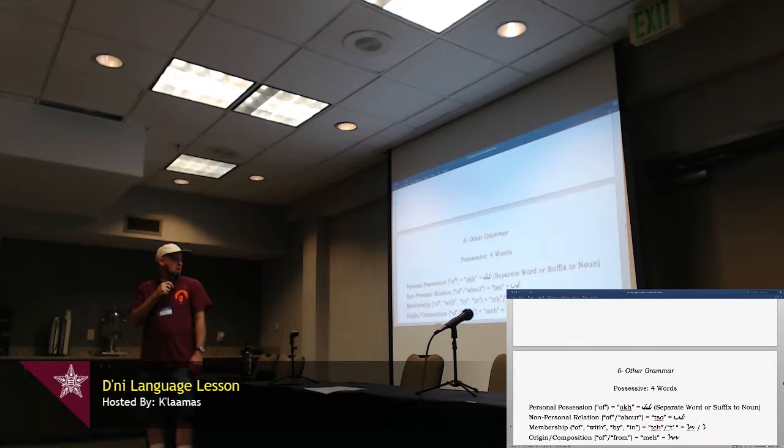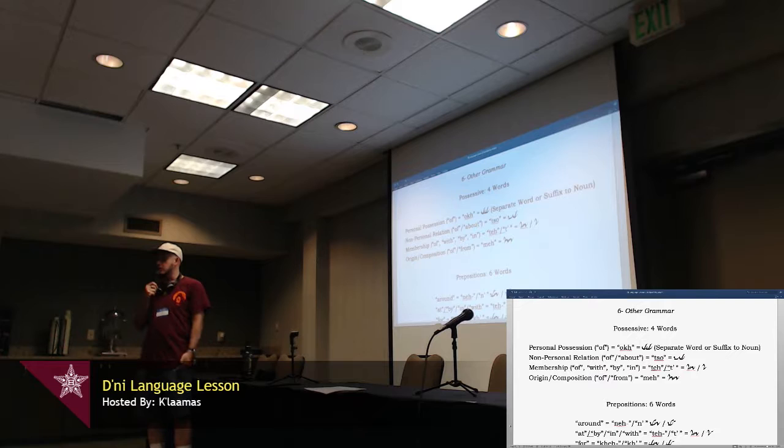Bit on other grammar, for possessive, four words, basically four versions of the word of. In English, the word of is a very broad general purpose word, but there's lots of different contexts. For personal possession, is okh. So like, kor okh, book of Kalamis, my book would be kor okh Kalamis. For non-personal relation, the word is tso. Membership in a group is te, which, depending on how it's used in English, might mean of, or with, or by, or in. Kind of a general purpose word, from an English point of view. And then, origin or composition, of or from, is meh. So, all variants on possessive, and the word of, in English.